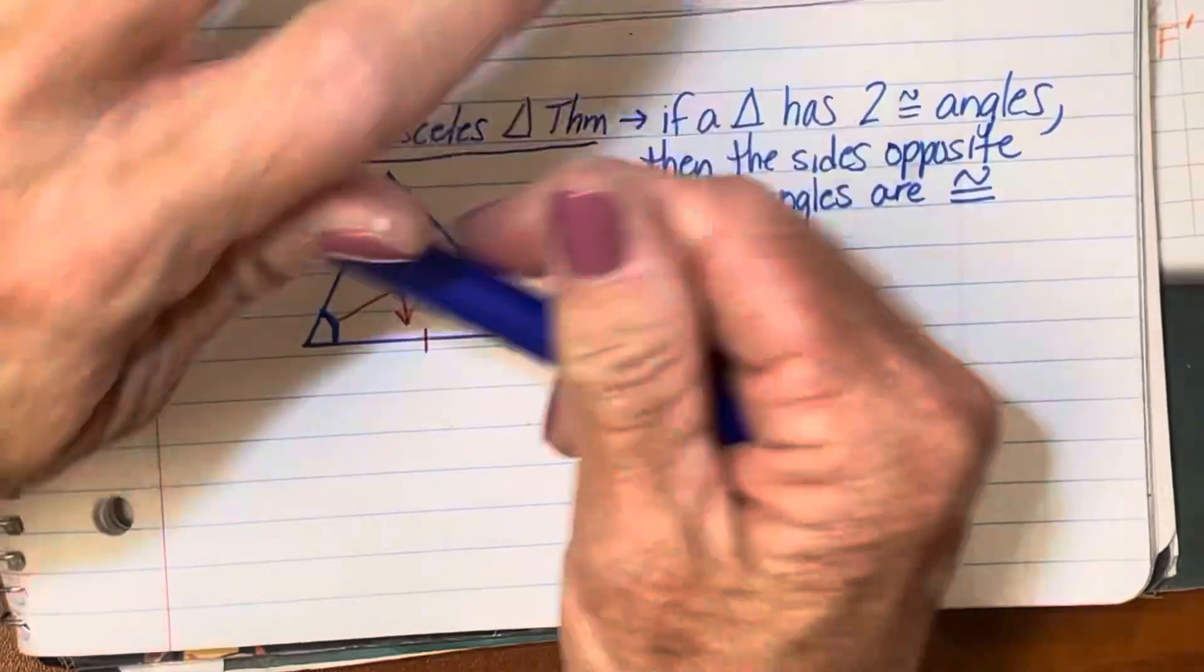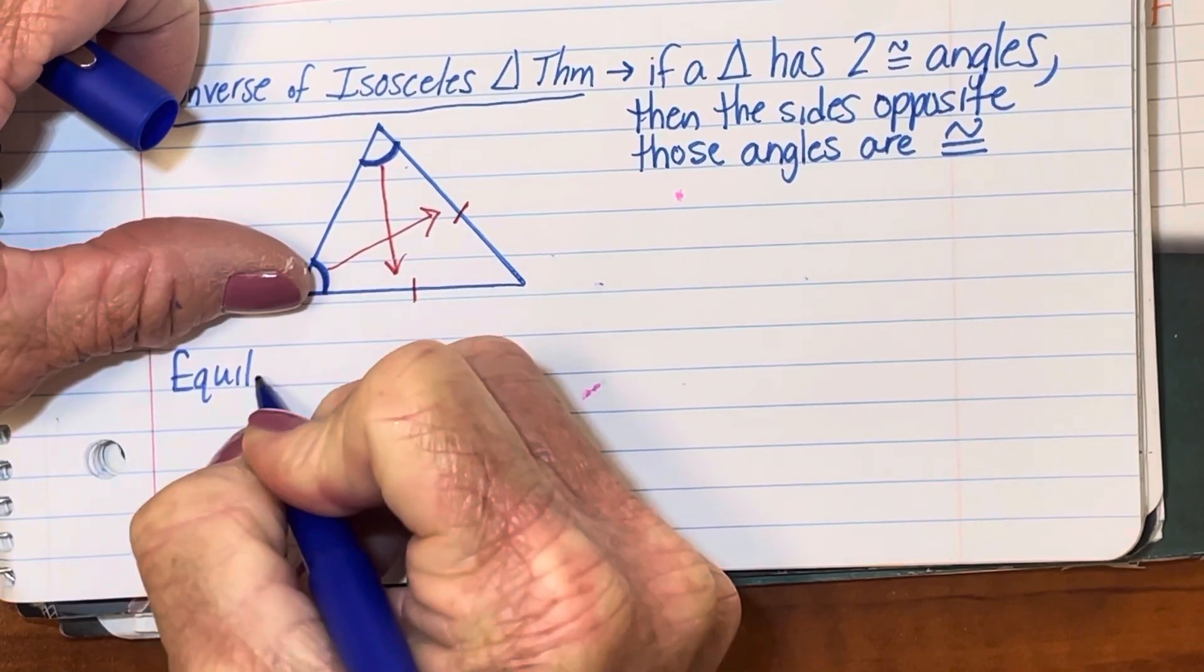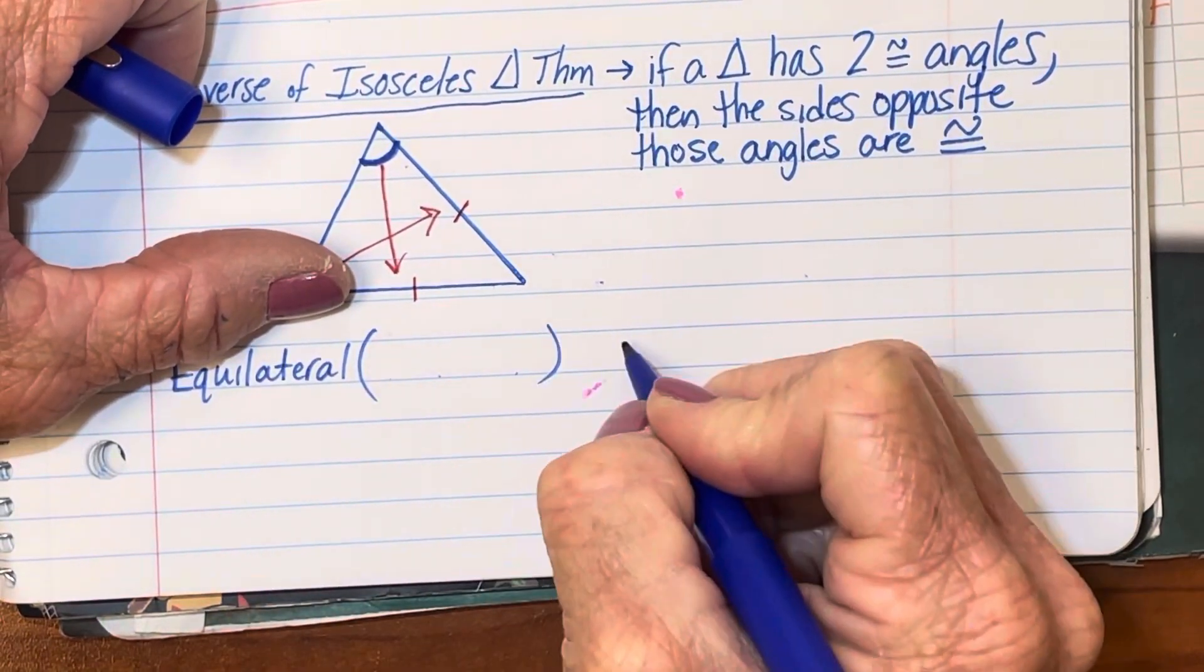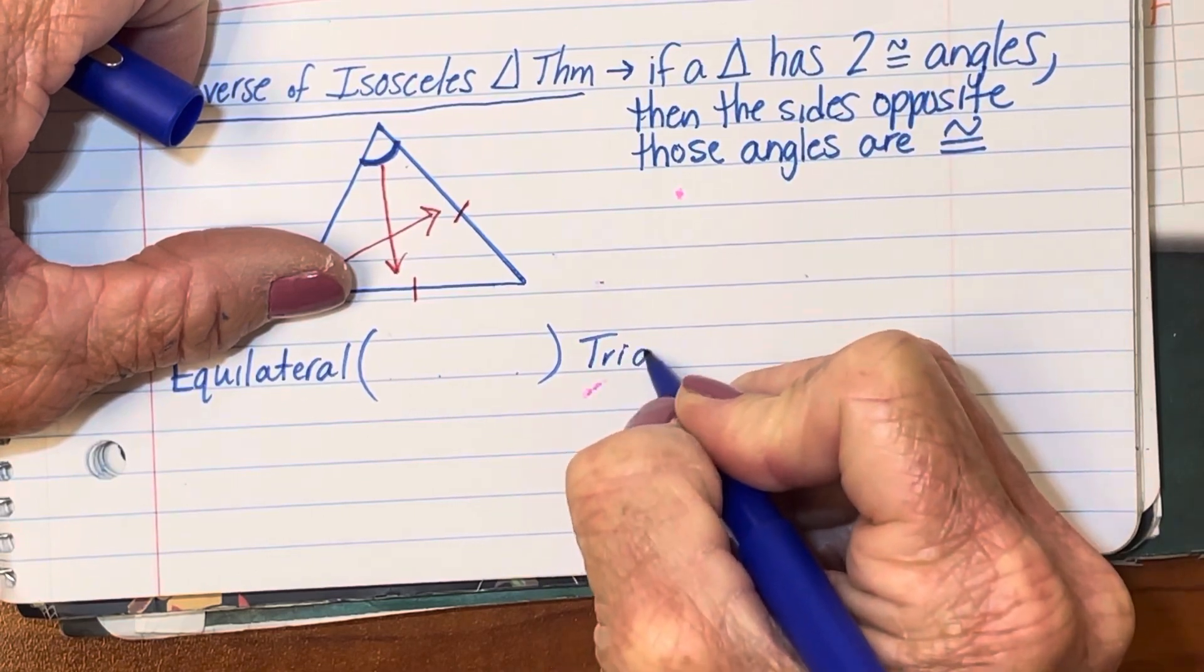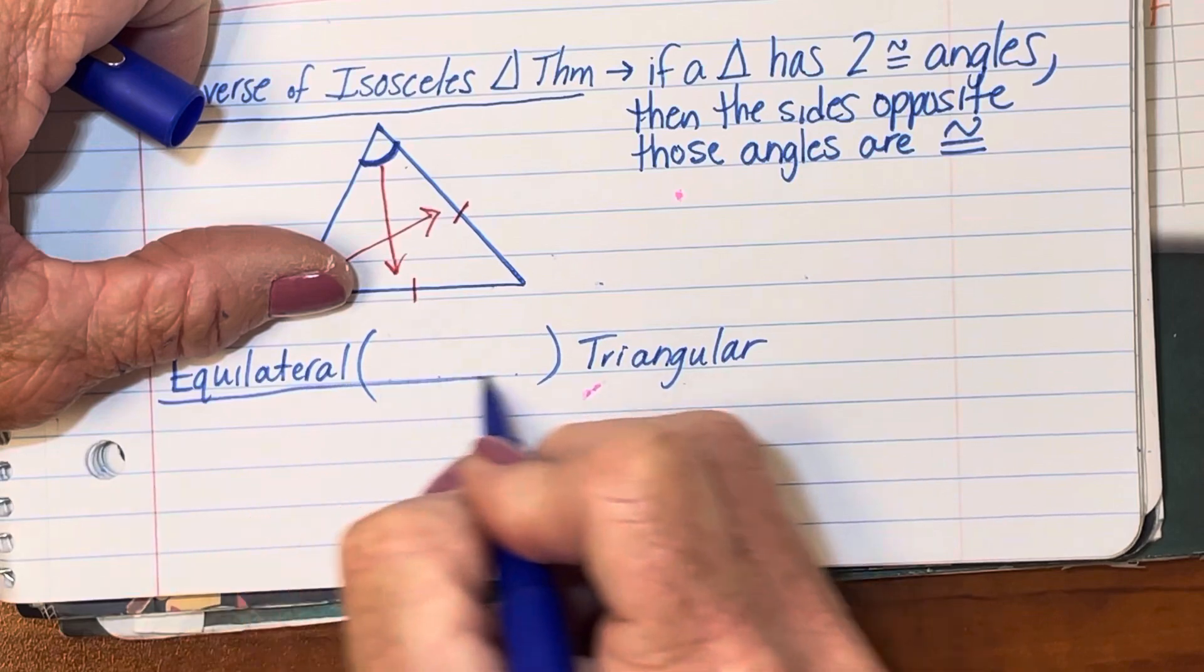All right, let's look briefly at an equilateral triangle. And what I want you to do is I want you to put parentheses like this, because we're going to fill in the blank there in just a second.